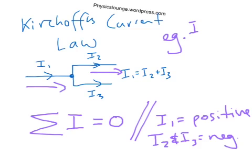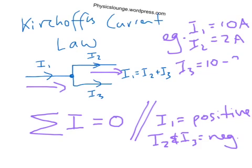If you had I1 equaling 10 amps, and I2 is 2 amps, then I3 will be 10 minus 2 to give the difference 8 amps.